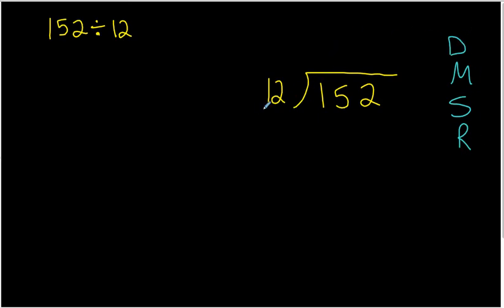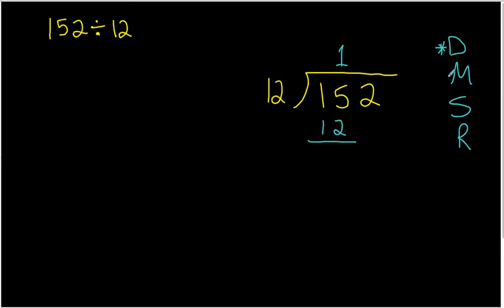We start by looking at the first term in our dividend and see how many times the divisor goes into it. 12 doesn't go into 1, so we look at the first two terms: how many times does 12 go into 15? It goes in one time, so we write 1 up here — that's the divide step. Next, multiply: 1 times 12 is 12. Then subtract: 15 minus 12 is 3. Then bring down the next term in the dividend and repeat.